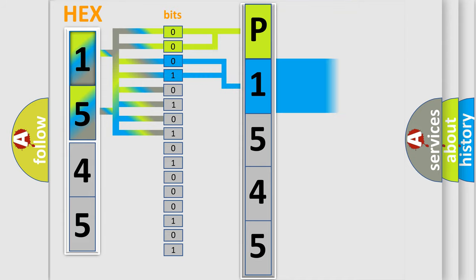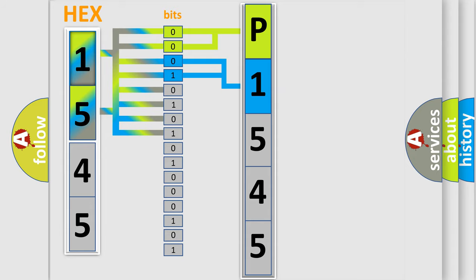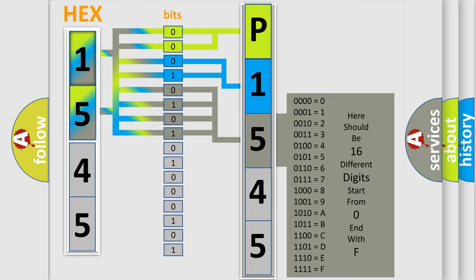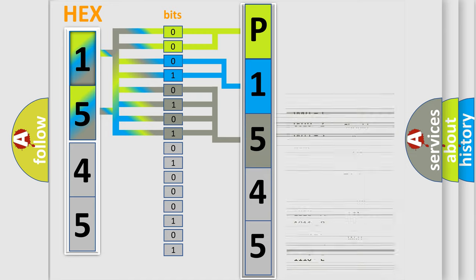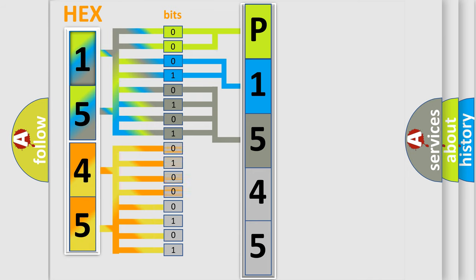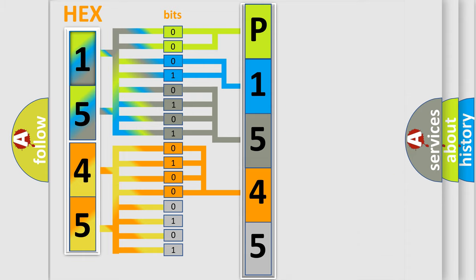The next two bits determine the second character. The last four bits of the first byte define the third character of the code. The second byte is composed of a combination of eight bits. The first four bits determine the fourth character of the code, and the combination of the last four bits defines the fifth character.